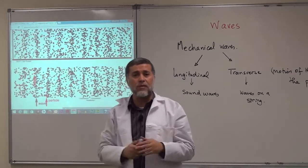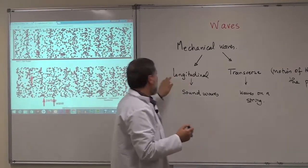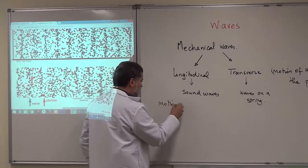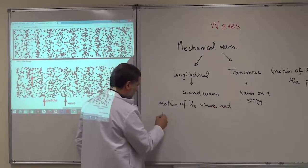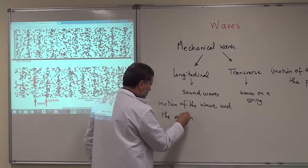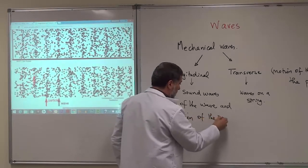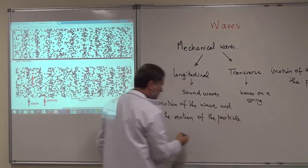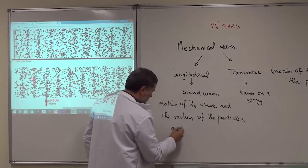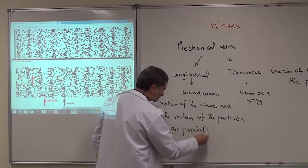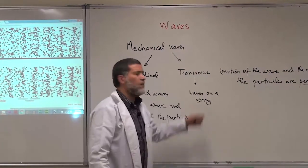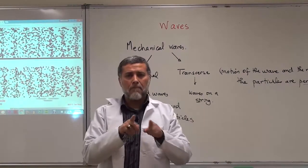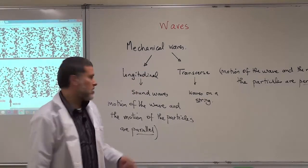The motion of the wave is to the right and the particle is moving right and left — so these two motions are parallel. In a longitudinal wave, the motion of the wave and the motion of the medium particles are parallel. So the key distinction is: if the motions are perpendicular, we call it a transverse wave — example: wave on a string; if the motions are parallel, we call it a longitudinal wave — example: sound waves.